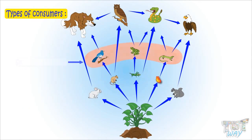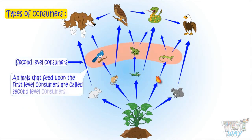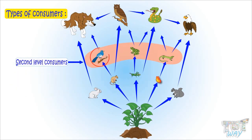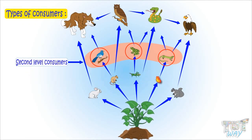Second level consumers are those that feed upon the first level consumers. Examples include insectivorous birds, frog, and lizards. All these animals eat the primary consumers like rabbits, rats, grasshoppers, and butterflies that eat plants only.